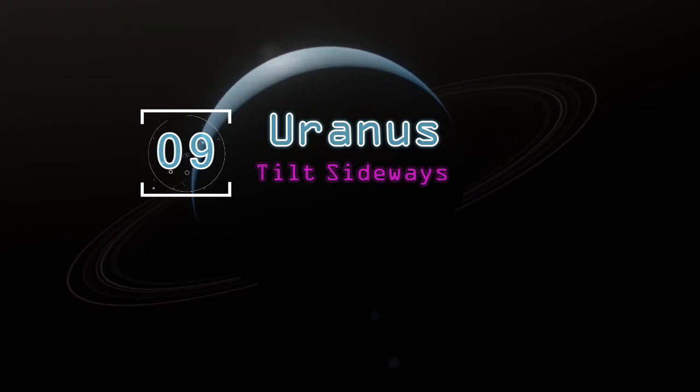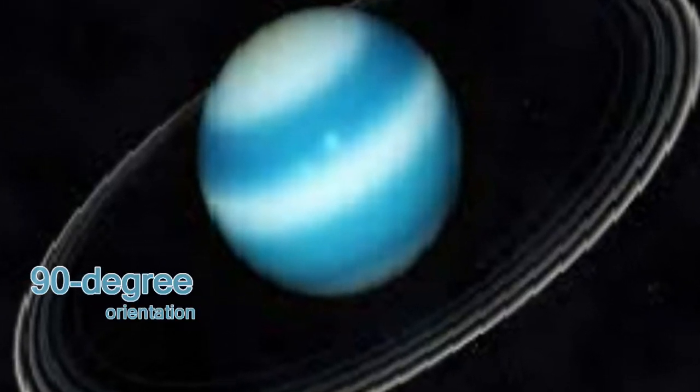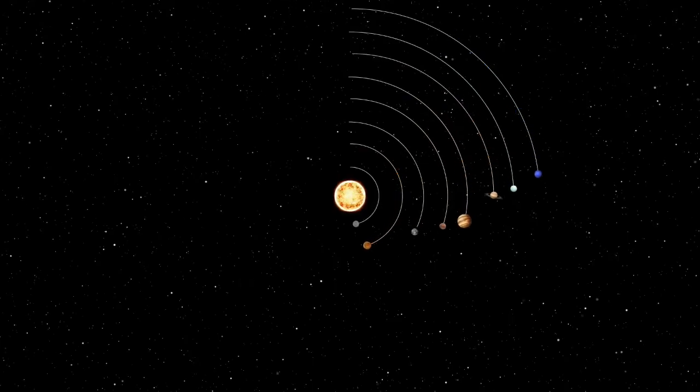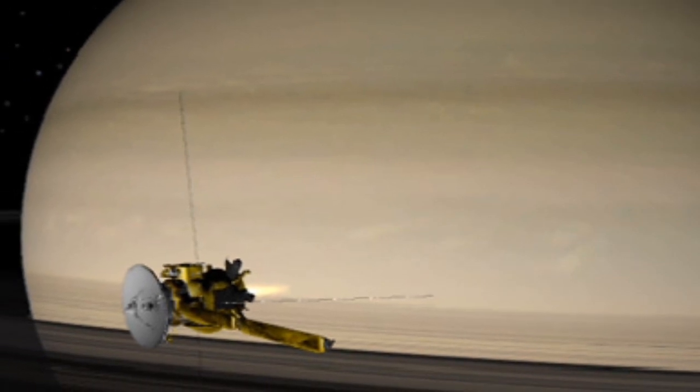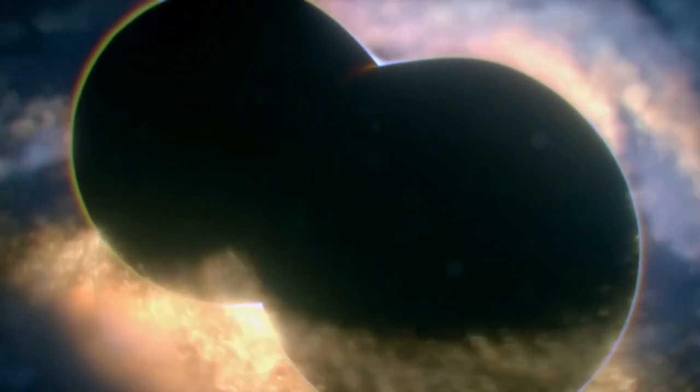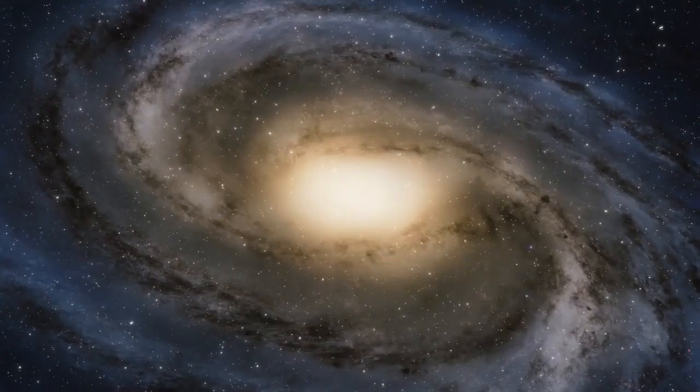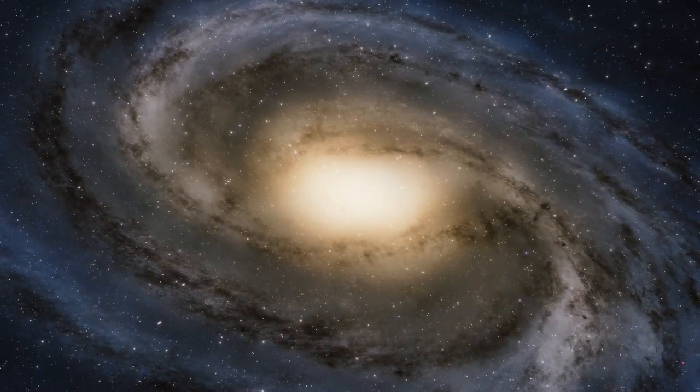Uranus tilts sideways. Uranus has an odd 90-degree orientation. First, the planet rotates on its side, resembling a ball rolling around the Sun. According to NASA's Uranus guide, the planet's peculiar orientation is most likely due to a cataclysmic collision in the distant past, creating the solar system's most intense season.